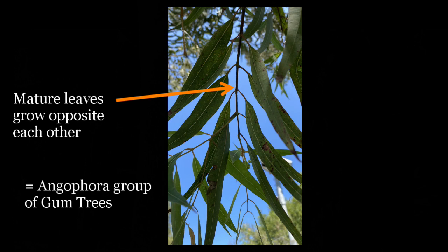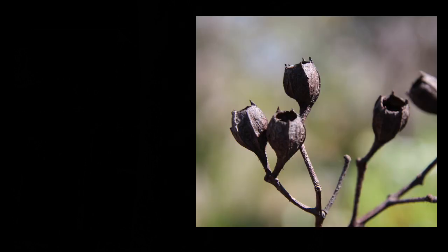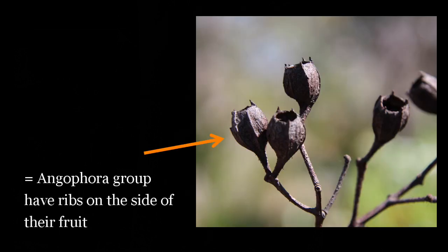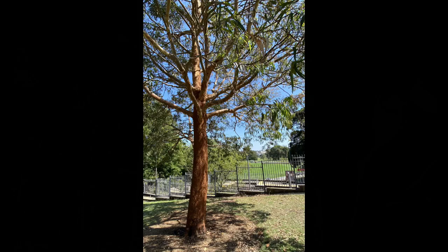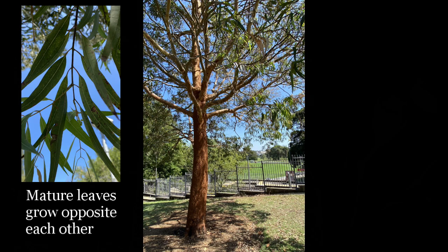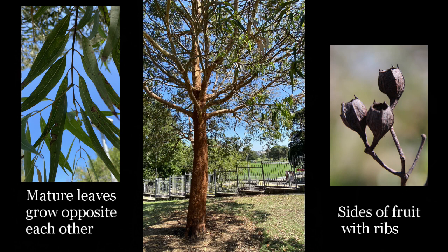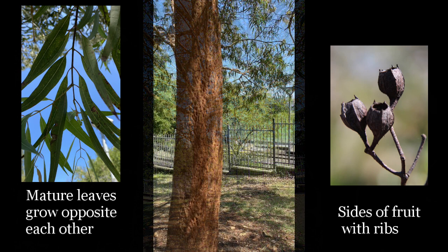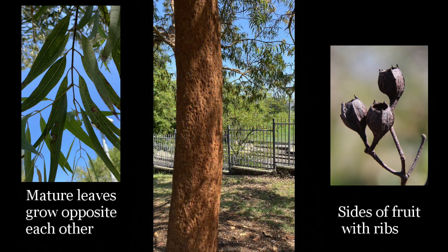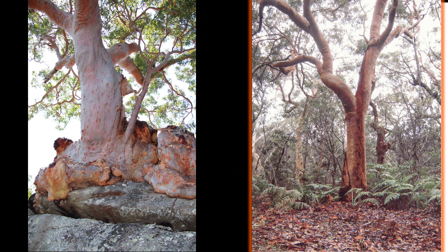To double check that, let's look for a fruit — that woody capsule. The angophora fruit have these distinctive ribs. So this tree, with its leaves growing opposite each other and ribbed fruit, puts it into the angophora group, and the characteristic smooth bark identifies it as a Sydney red gum. Sydney red gums are found throughout the sandstone country of the Sydney region.